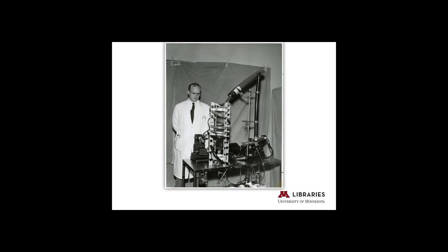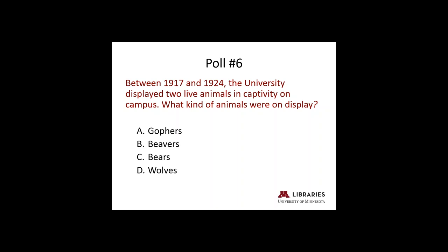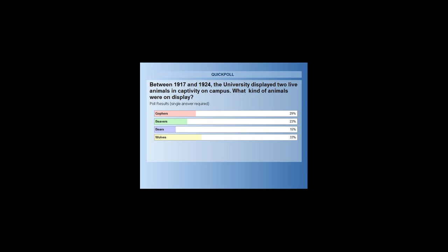That was an easy one apparently for many of you, so we're going to try something with this next question. This is one of my favorites. Between 1917 and 1924, the university displayed two live animals in captivity on campus. What kind of animals were on display? Gophers, beavers, bears, or wolves? We have 29% saying gophers, 23% beavers, 15% bears, and 33% wolves — a fairly even split. You might be surprised to learn the answer is beavers.